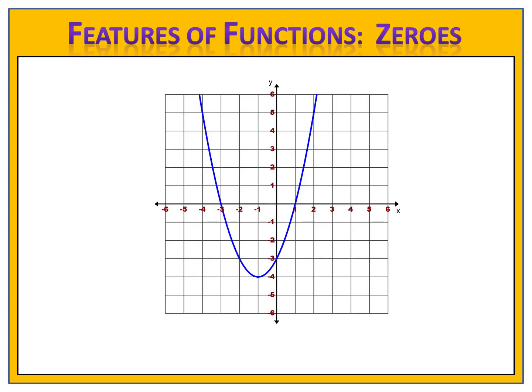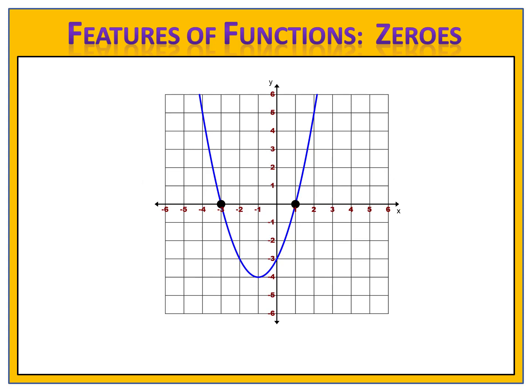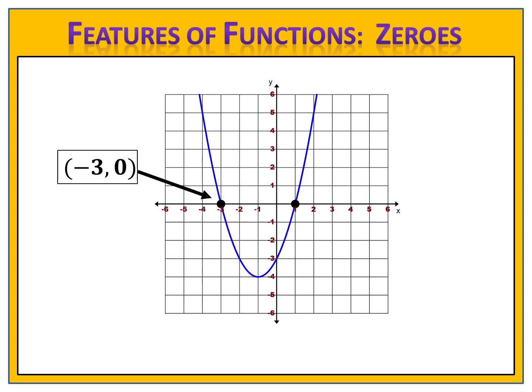Here we have a graph of a function. Take a look along the x-axis — notice that this function intersects the x-axis in two places. Let's draw points at those two locations. Those two points are known as the zeros of the function. Let's take a look at the coordinates of each point. The first point is negative three, zero. That tells us that we have an input of negative three and an output of zero.